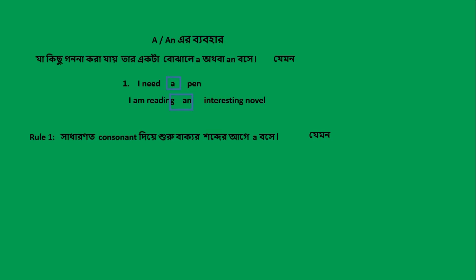નીઓમે આકે બલ ચ્છે — શ્ભ્દের আগে 'a' বসে। যেমন — I need a pen। পেনের প্রথম অক্ষর 'p' হলো কনসোনেন্ট, তাই 'a' বসে।